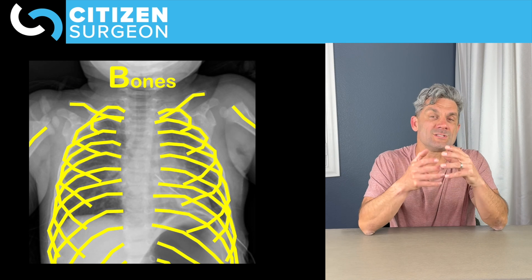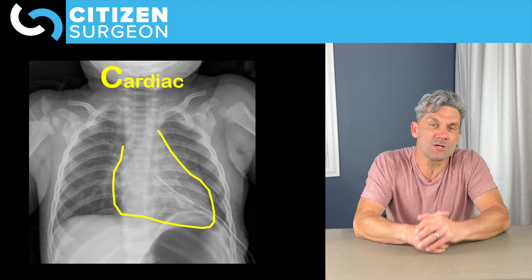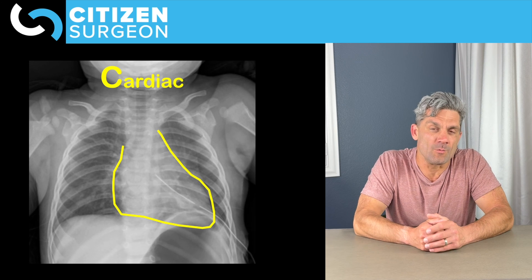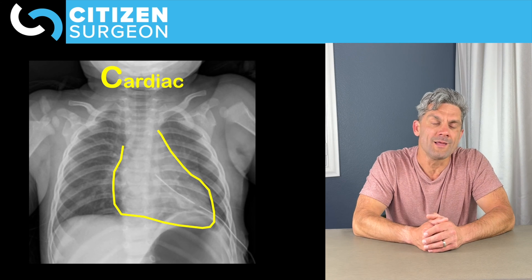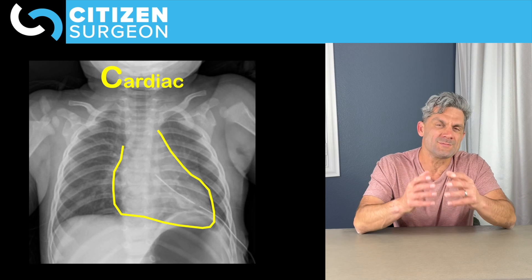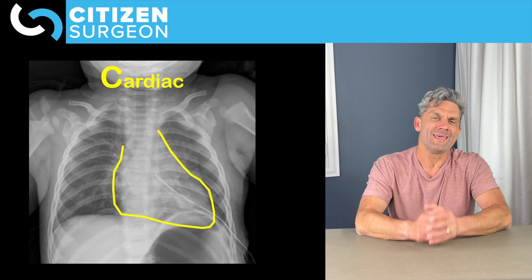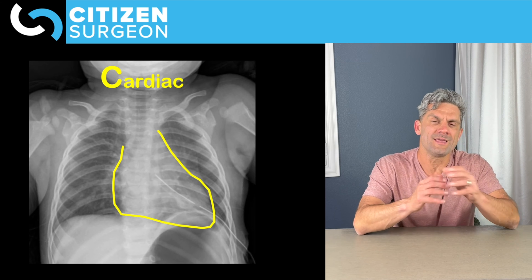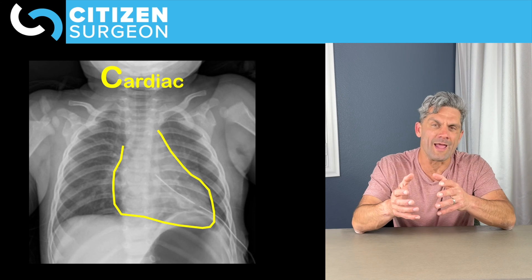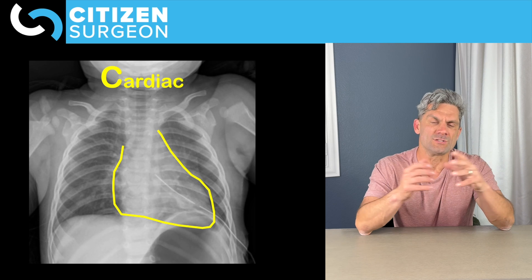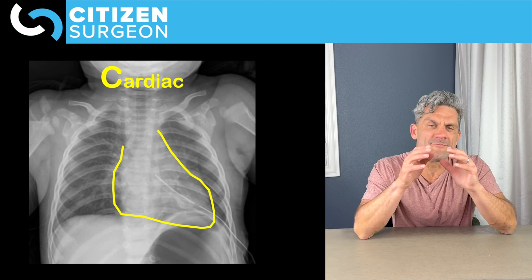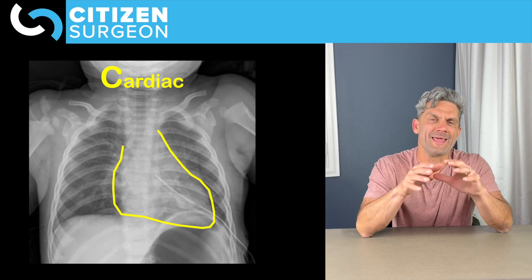Then we move on to C — C is cardiac. That is looking at the cardiac silhouette. There is a lot when it comes to the cardiac silhouette: we can look for a boot-shaped heart, cardiomegaly, or loss of the aortic pulmonary window. But really I'm looking at the heart — is it shifted to the right or the left? Is it in levo position where it's supposed to be on the left, or dextro position on the right? Do we have enlargement of the heart — does it take up more than one of the hemithoraces? That's C for cardiac.